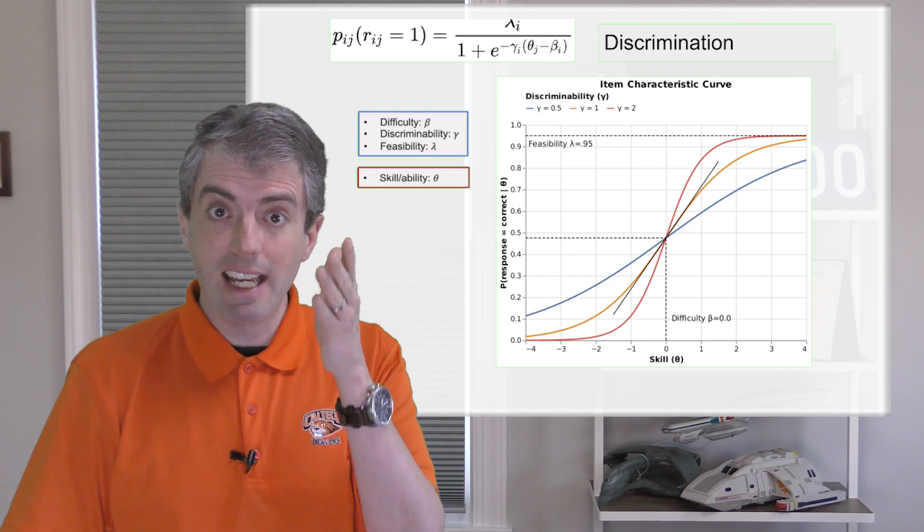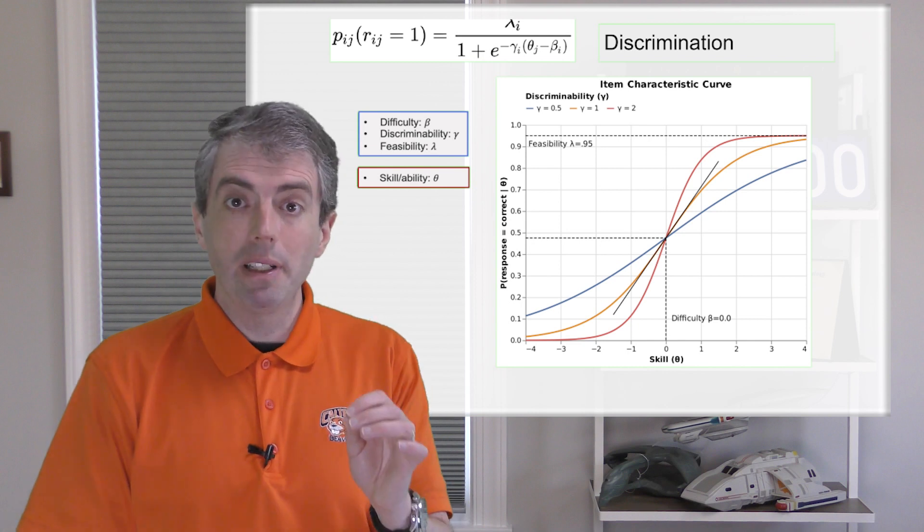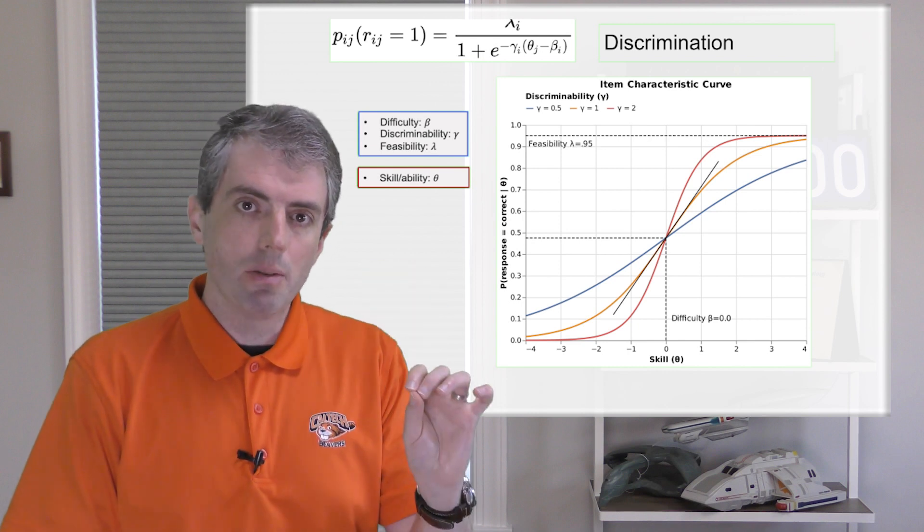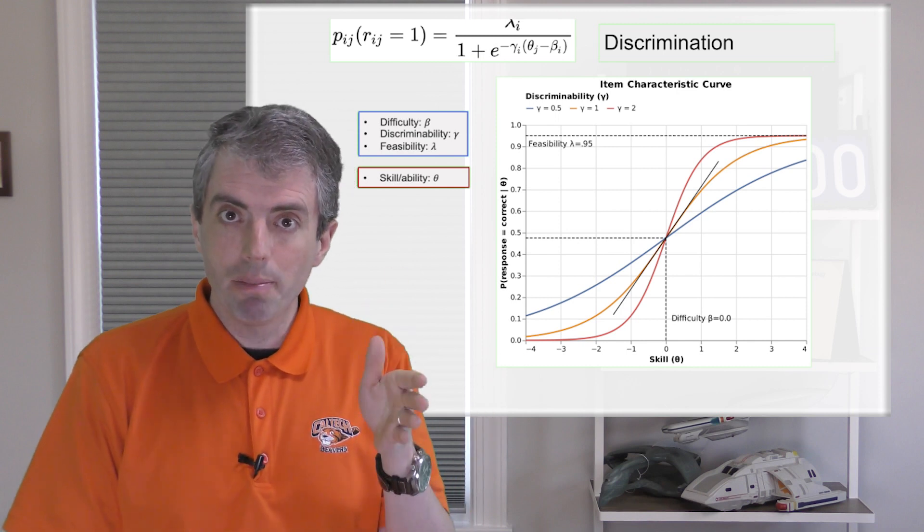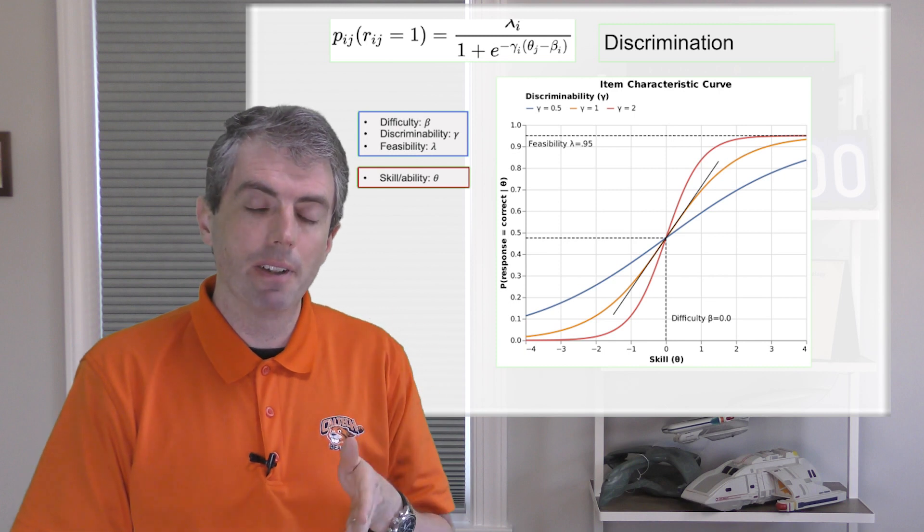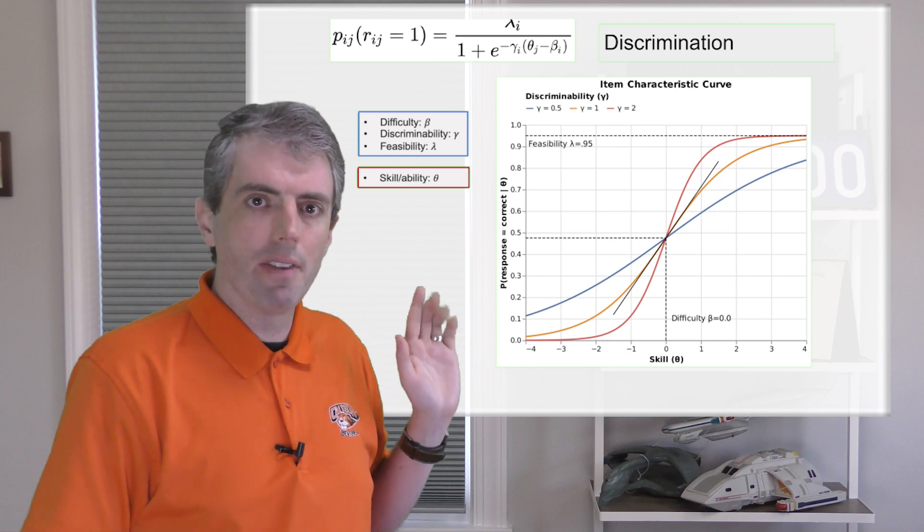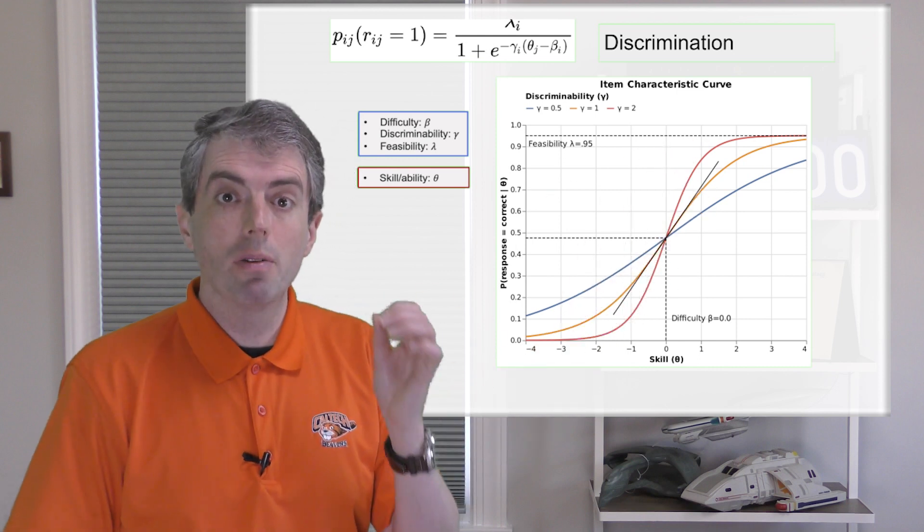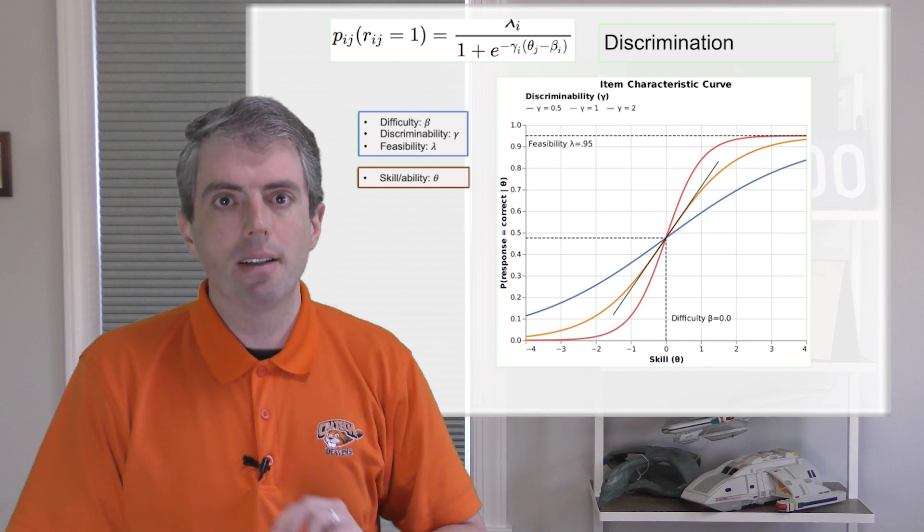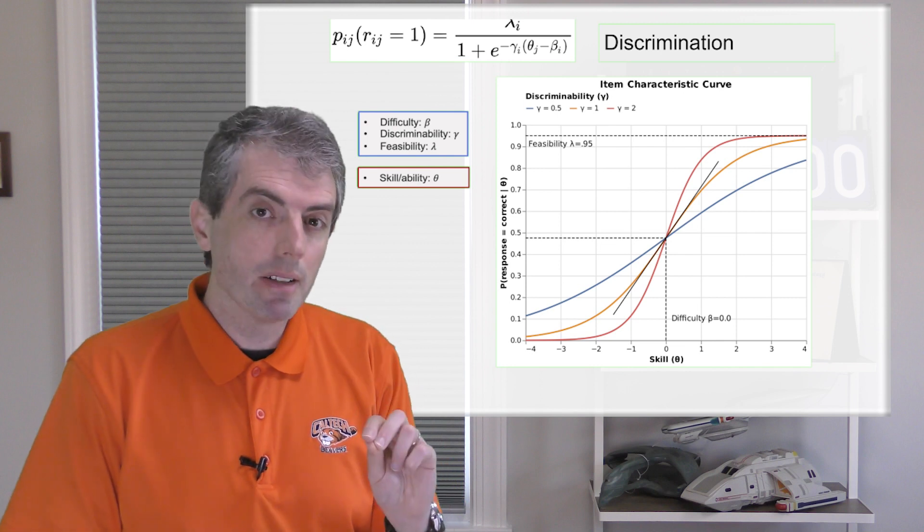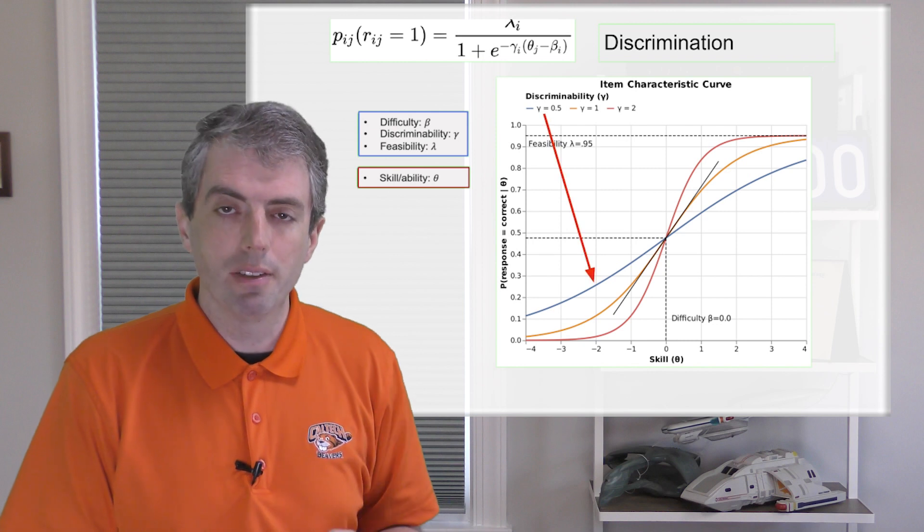So let's make this a little bit more complicated and add two additional terms: discriminability and feasibility. Discriminability is how well the questions distinguish better subjects from worse subjects. It's multiplied by the difference between the skill and the difficulty. Mathematically, this changes the slope of the response curve. Here's a picture of that for a question with zero difficulty. As the skill x-axis goes up, the more likely the subject is to answer the question correctly. The bigger the discriminability, the steeper the slope.